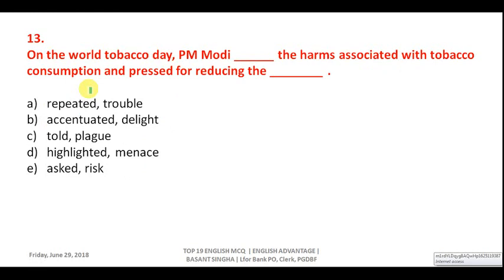Question thirteen: 'On World Tobacco Day, PM Modi _____ the harms associated with tobacco consumption and pressed for reducing the _____ of tobacco.' The blank needs a word like 'menace' — tobacco cannot be a 'delight.' 'Trouble' is used in a personal sense. 'Plague' could work but 'told' is inappropriate without an object. 'Ask' is totally inappropriate. Correct answer is D — highlighted and menace.